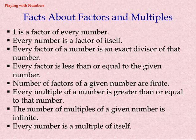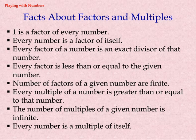Facts about factors and multiples: 1 is a factor of every number. Every number is a factor of itself. Every factor of a number is an exact divisor of that number. Every factor is less than or equal to the given number. The number of factors of a given number are finite.